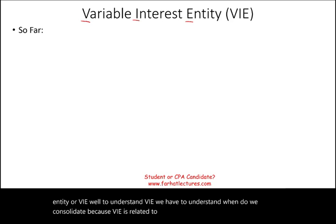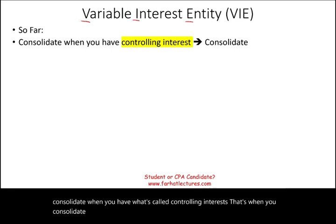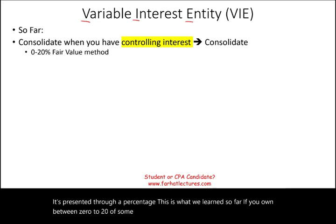We learned so far that you have to consolidate when you have what's called controlling interest. Controlling interest is usually presented through a percentage. If you own between 0% to 20% of some company's equity stock, you account for this investment using the fair value method. In other words, you have no significant control, therefore you will account for it at fair value — if the stock goes up, your investment goes up, and vice versa.